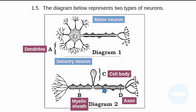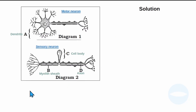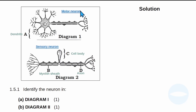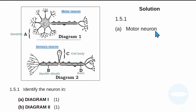Now let's get to the questions. Question 1.5.1 asks us to identify the neurons: number A in diagram 1 and number B in diagram 2. Diagram 1, like we said, is a motor neuron, and diagram 2 is a sensory neuron. So the answer for 1.5.1: A is motor neuron, and B is sensory neuron.